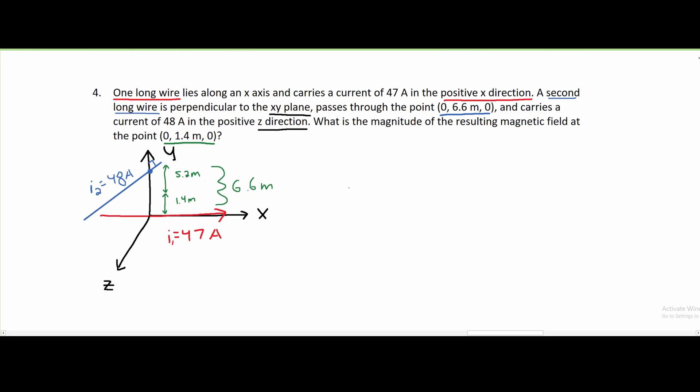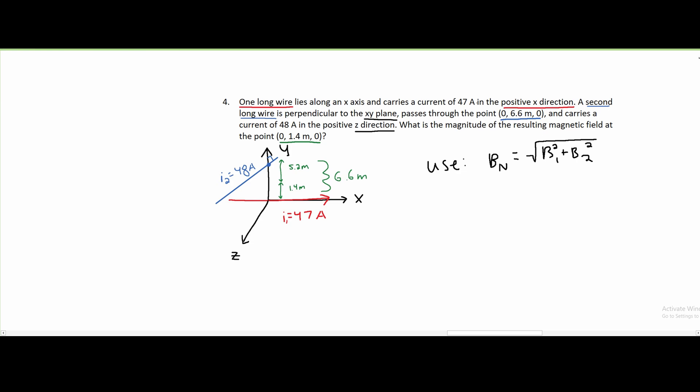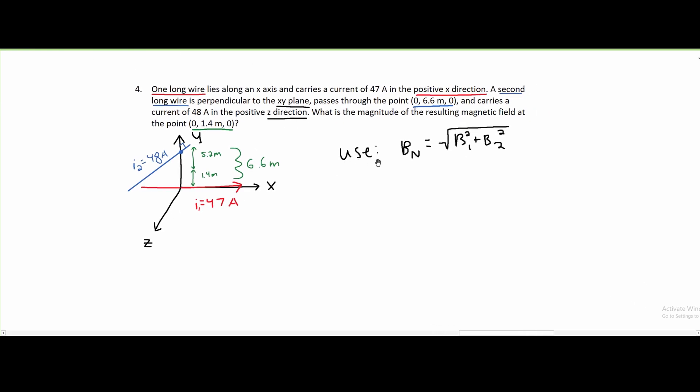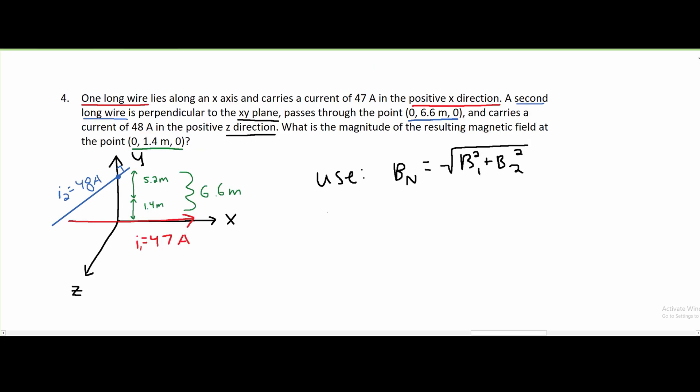So we are going to use this formula. B_net is equal to the square root of our B1 plus B2, and both of our Bs are going to be squared. Normally, if we were to solve this for our B_net, as we have done in the past, it would just be B_net equals B1 plus B2. However, since we are given exact XYZ directions, we have to use this formula to find the magnitude.